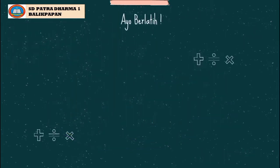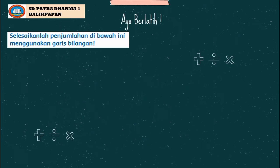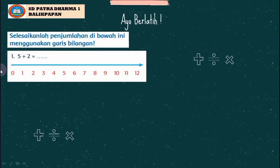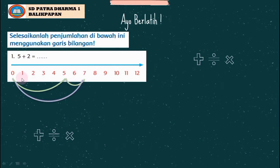Ayo berlatih! Selesaikanlah penjumlahan di bawah ini menggunakan garis bilangan. Soal nomor 1: 5 + 2 = ? Kita buat garis lengkung dari 0 ke angka 5. Karena ditambah 2, dari angka 5 kita geser sebanyak 2: 1, 2, dan berhenti di angka 7. Jadi dari 0 sampai 7 ada 7 satuan. Maka 5 + 2 = 7.